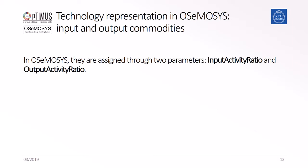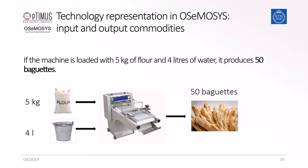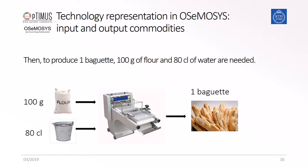First, we'll look at the input and output activities. They are defined in two parameters called input activity ratio and output activity ratio. As an example, a bakery has a baking machine, which is our technology. If you supply five kilograms of flour and four liters of water, you can get 50 baguettes. Then to produce one baguette, you need 100 grams of flour and 8 centiliters of water.